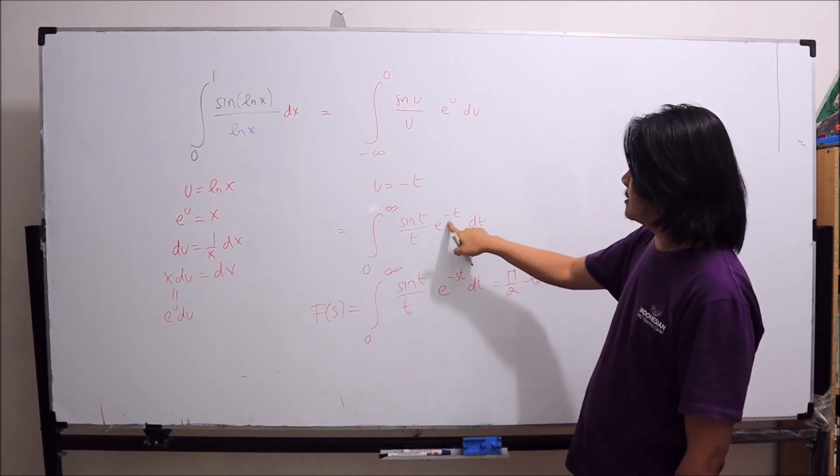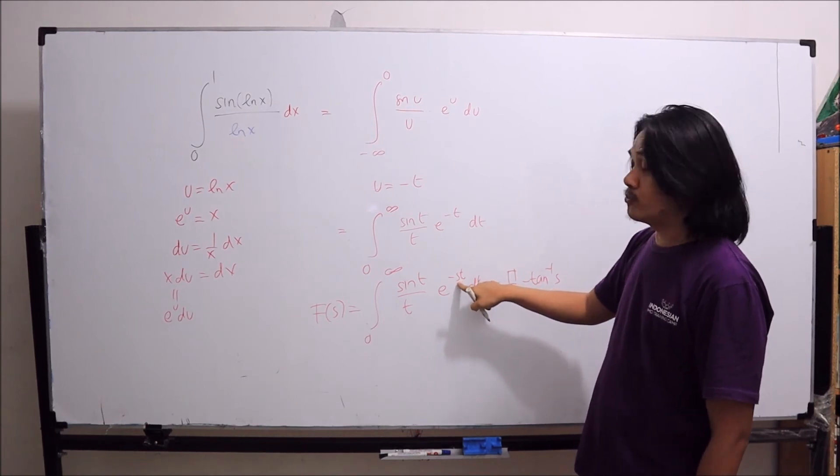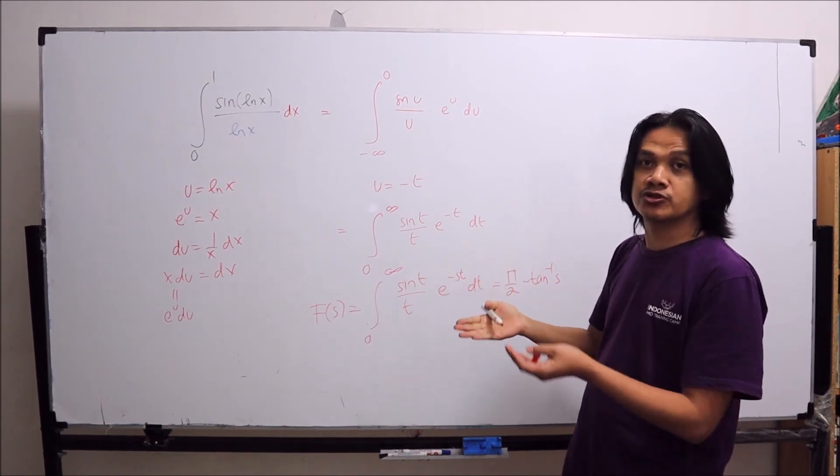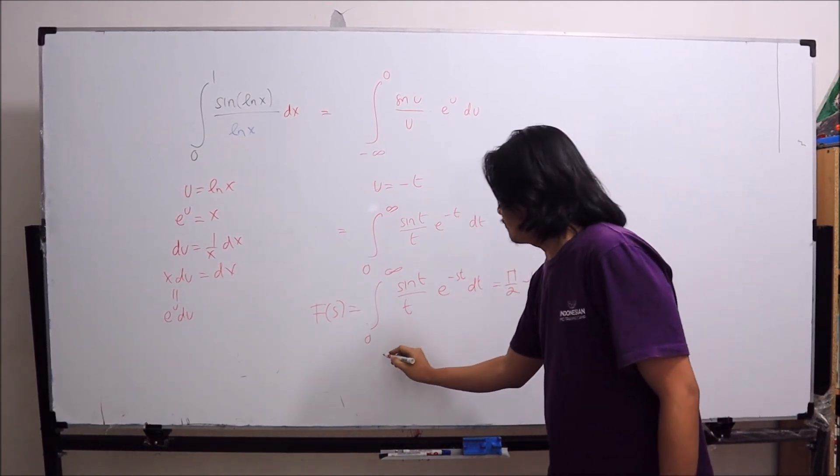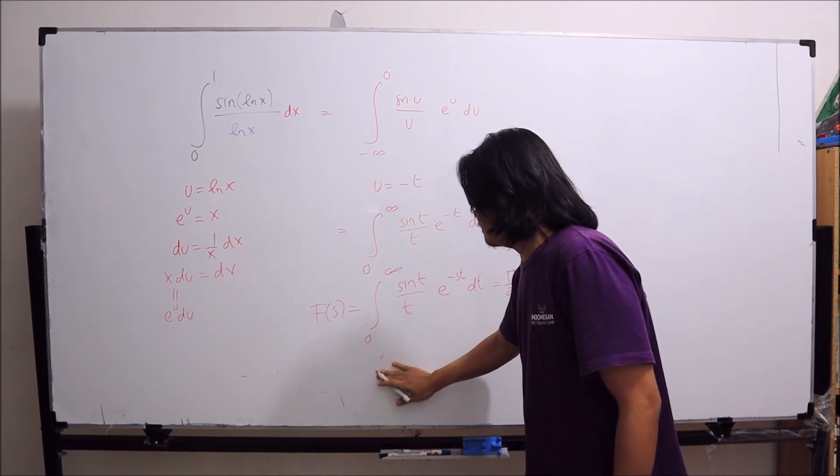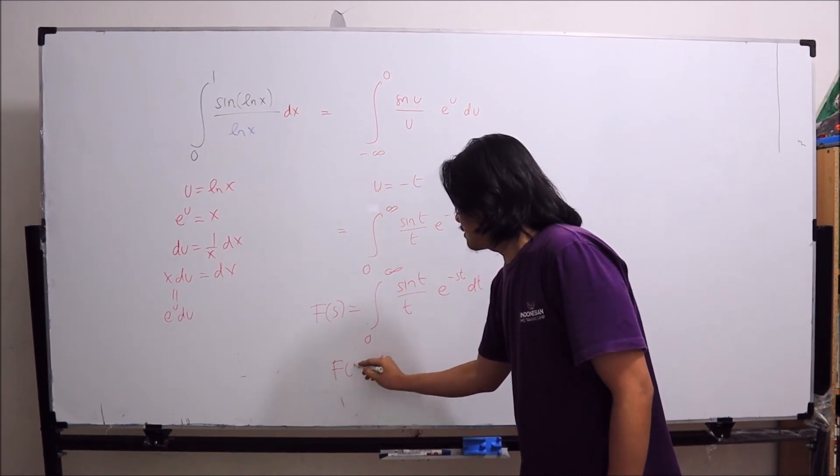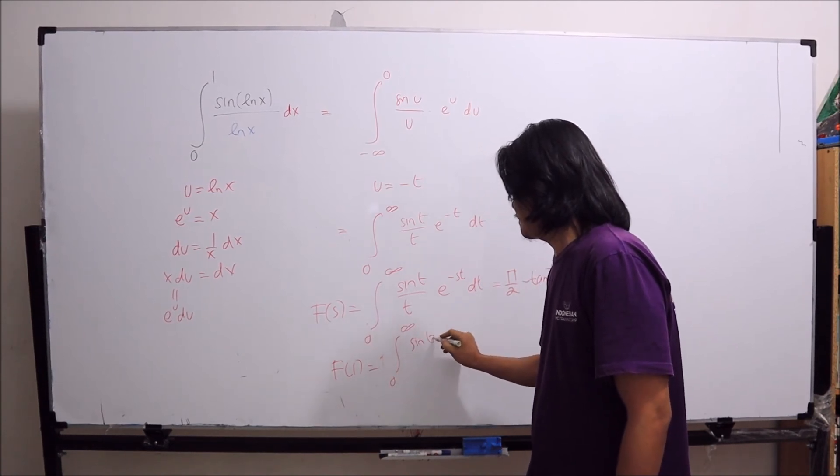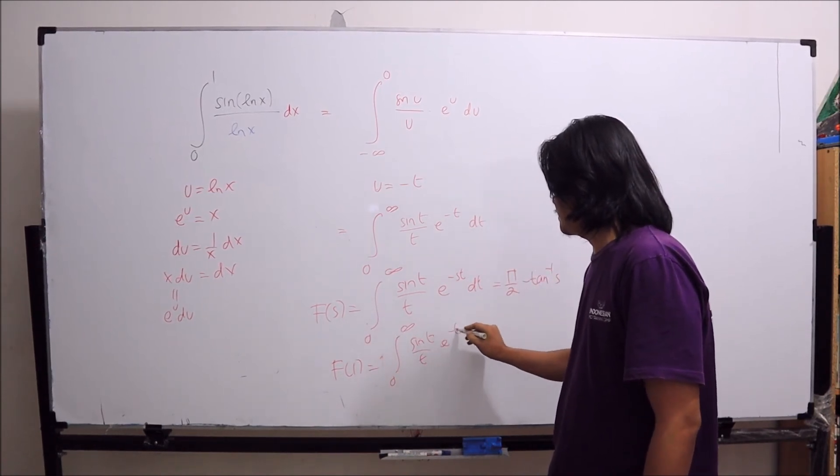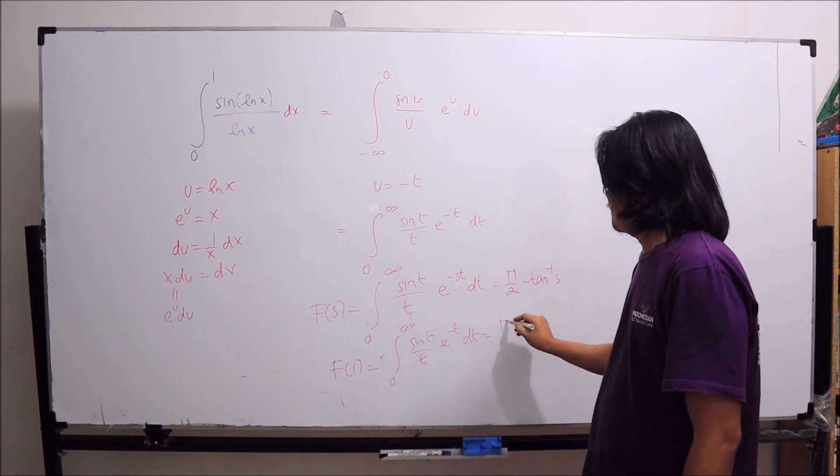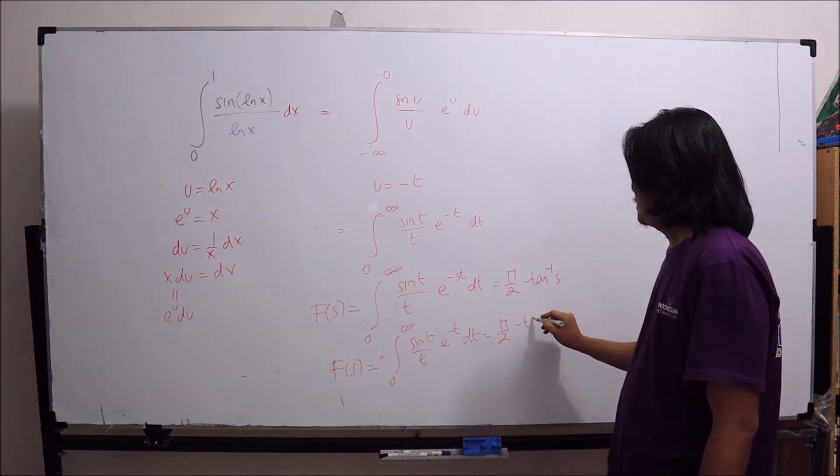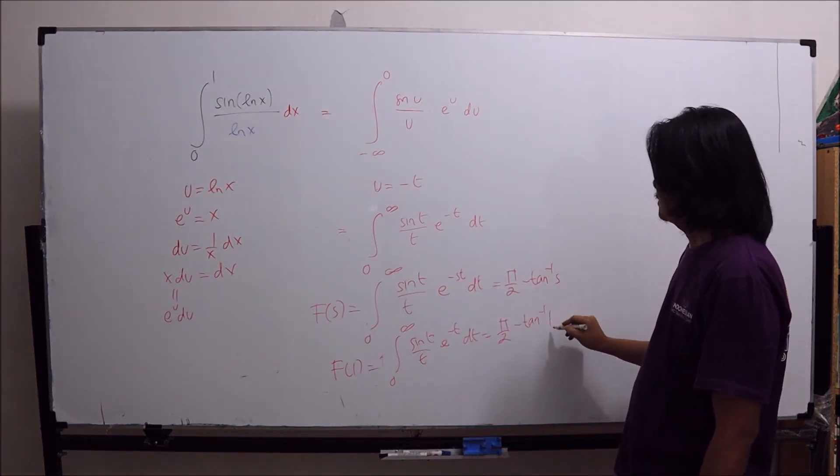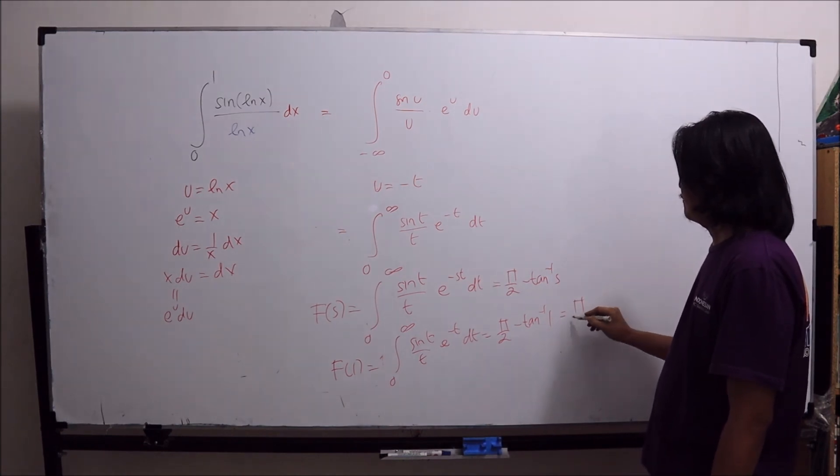In order to have this expression, we just need to take the limit as s goes to 1. Therefore, the integral we are looking for is f(1), which equals pi over 2 minus arctan of 1. Therefore, we have pi over 4.